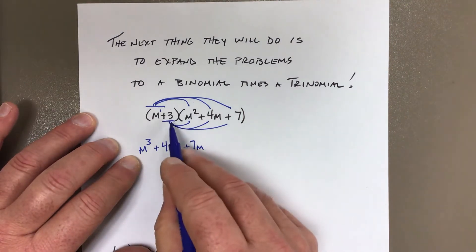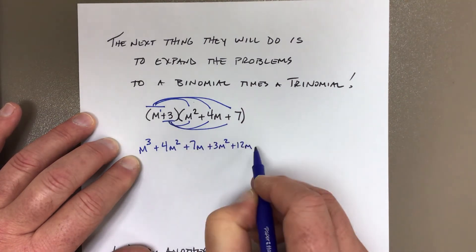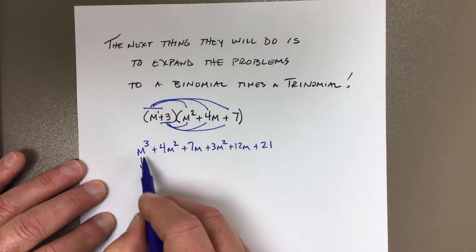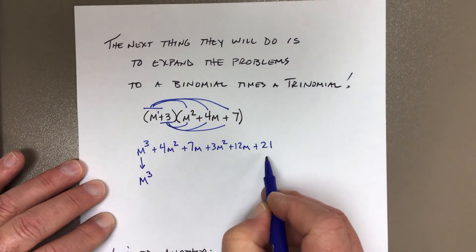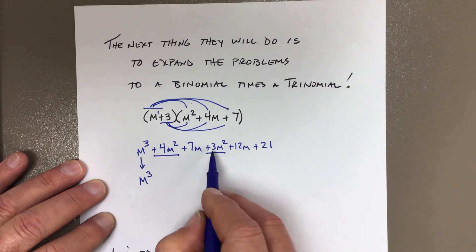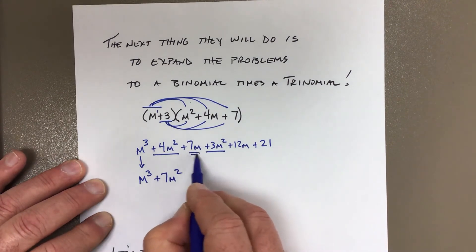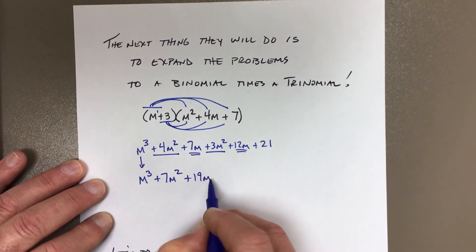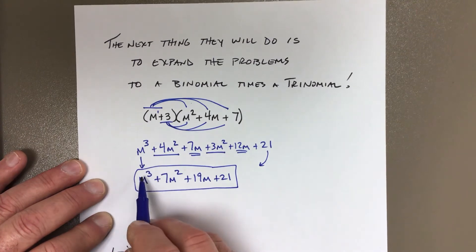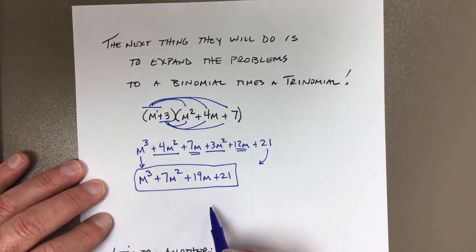Then take the 3 and distribute it: 3 times M squared is 3M squared, 3 times 4M is 12M, and 3 times 7 is 21. Then gather like terms: 4M squared plus 3M squared is 7M squared, and 7M plus 12M is 19M. So your answer is M to the third plus 7M squared plus 19M plus 21. Your leading term is first and your constant is last.